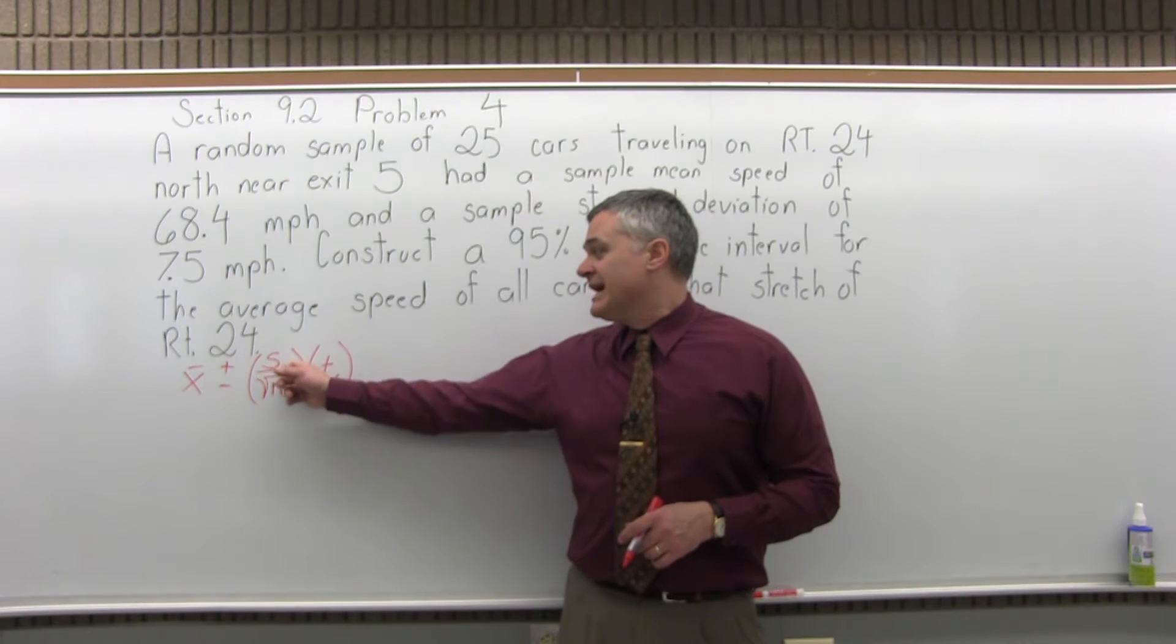Now there are two formulas for confidence interval, there's really even three. We use this one with the s and the t sub c when we do not know the population standard deviation. We use the one with the s and the t sub c when we know the sample standard deviation, which is a more realistic situation, which is what this problem represents. We know the standard deviation only of the sample, not the entire population, not all the cars. So this is what we're going to fill in.